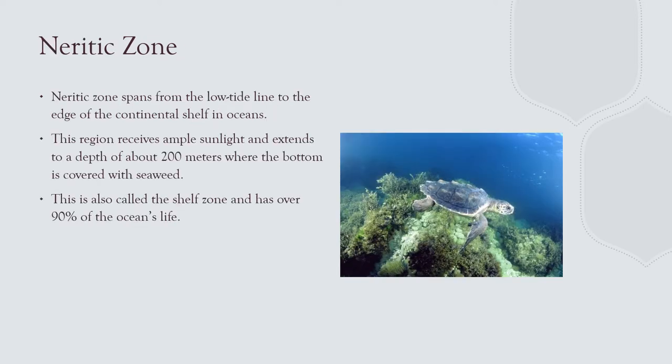The neritic zone is over the continental shelves with ample sunlight — about 200 meters deep. We also refer to it as the shelf zone. Combined with the littoral zone, it contains over 90 percent of the ocean's life, as most life is solar-based.